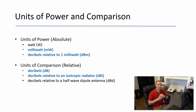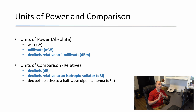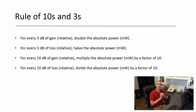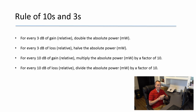Now to the math. RF math is boiled down to tens and threes. If you can add or subtract by three or ten, or multiply or divide by two or ten, you have all the knowledge you need. Every 3 dB of gain doubles your absolute power. Every 3 dB of loss halves your absolute power. Gaining 10 dB multiplies your absolute power by a factor of 10. Losing 10 dB divides your absolute power by 10.